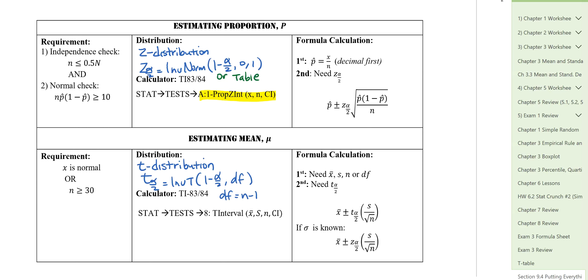Hello, in this lesson I'm going to review Chapter 9, where we're estimating mean and proportion using confidence intervals, and we're also looking at sample size. So let's review the confidence interval for proportion, which is P.